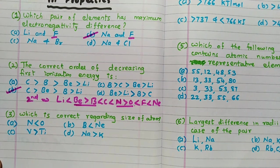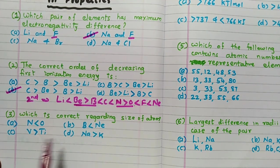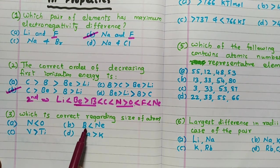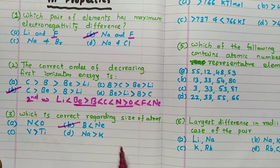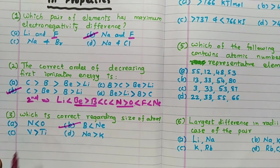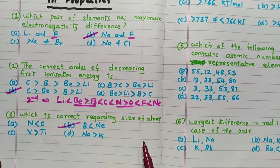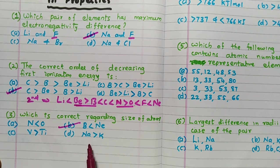Which statement is correct regarding size of atoms? For nitrogen and oxygen, the size order — nitrogen is more than oxygen, so option A is wrong. Boron less than neon is definitely correct because neon has the van der Waals radius, the highest radius among all elements in that period. Vanadium more than titanium is wrong — scandium to titanium to vanadium, radius decreases in D-block elements. Sodium more than potassium is wrong since potassium is more than sodium. So the answer is B.